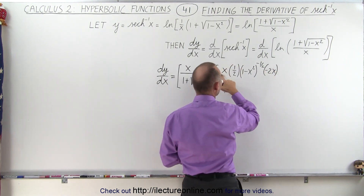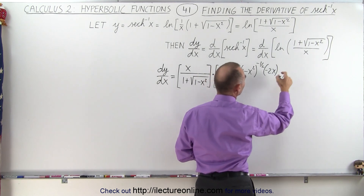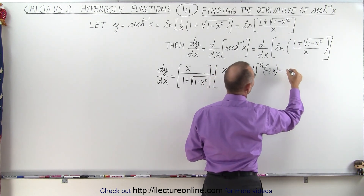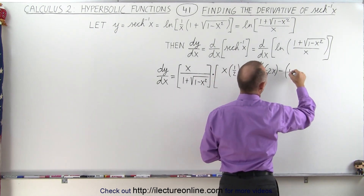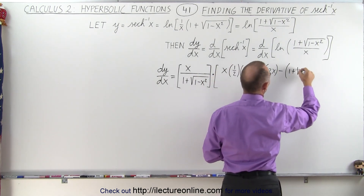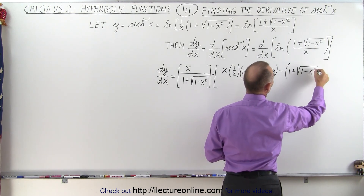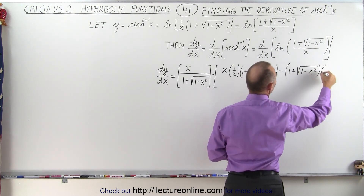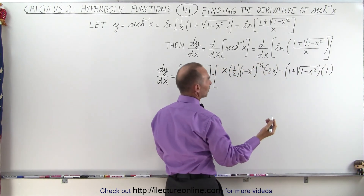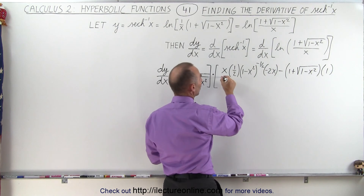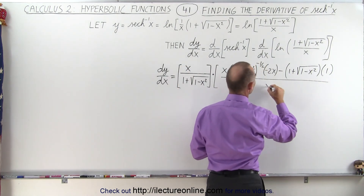So it's the denominator times the derivative of the numerator, minus the numerator — which is the quantity 1 plus the square root of 1 minus x squared — times the derivative of the denominator, which is simply 1, all divided by the denominator squared.